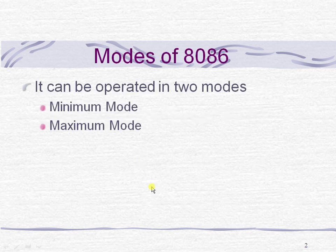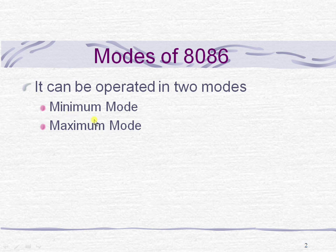8086 can be operated in two modes: minimum mode and maximum mode. In minimum mode, one processor along with memory and input-output devices are connected to the system bus, so it is called as single processor mode. When it comes to maximum mode, multiple processors — more than one — along with memory and input-output devices are connected to the system bus, so it is also called as multi-processor mode.